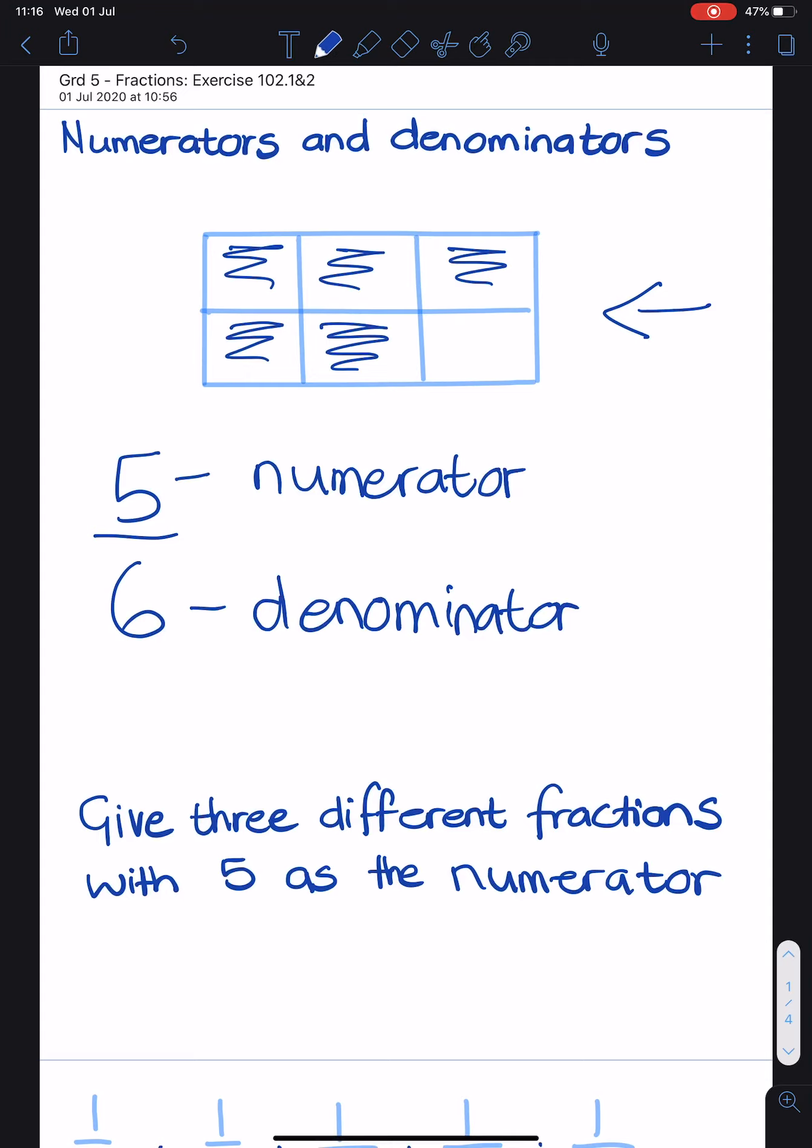The numerator tells us how many pieces have been taken. And you can see that I have coloured in 5 blocks. I have taken 5 blocks of the chocolate. So I have taken 5 out of 6 blocks.